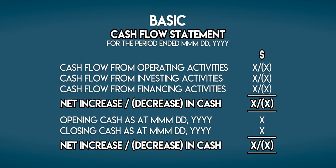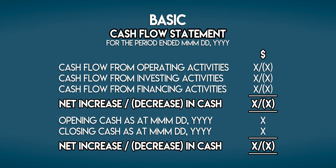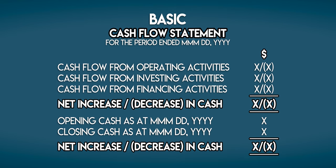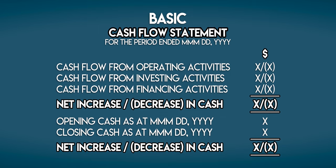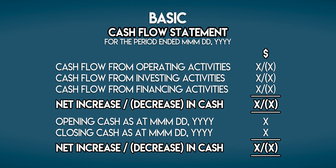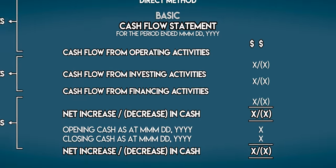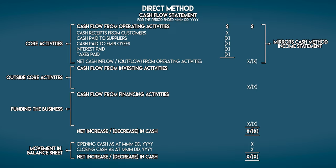This is the basic structure of the cash flow statement. Positive numbers represent cash inflows and negative numbers represent cash outflows. Now there are a couple of ways to make a detailed cash flow statement — we can use the direct method or the indirect method. We'll start with the direct method. Cash flow from operating activities under the direct method mirrors the income statement prepared under the cash method which we saw earlier.